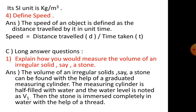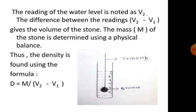C, long answer questions. Question 1: explain how you would measure the volume of an irregular solid, say a stone. The volume of an irregular solid, say a stone, can be found with the help of a graduated measuring cylinder. The measuring cylinder is half filled with water and the water level is noted as V1. Then the stone is immersed completely in water with the help of a thread. The reading of the water level is noted as V2. The difference V2 minus V1 gives the volume of the stone. The mass of the stone is determined using a physical balance. Thus, density is found using the formula D equals M divided by (V2 minus V1).